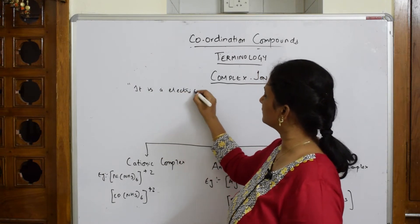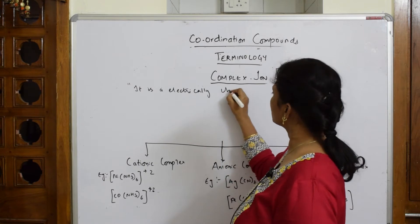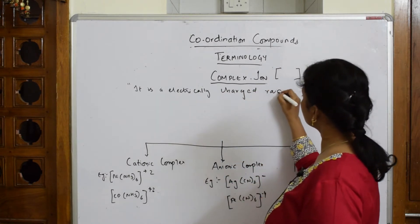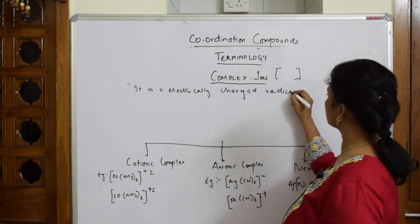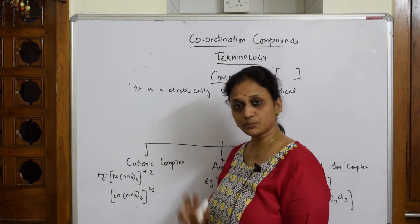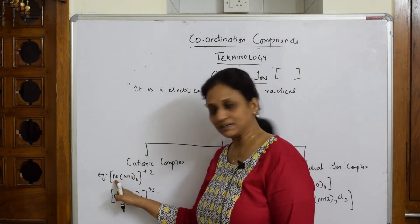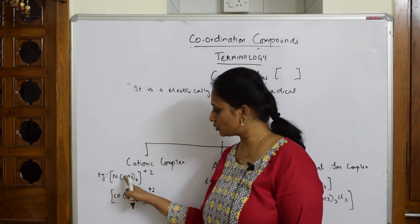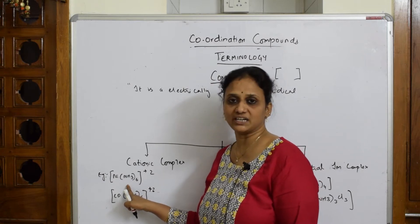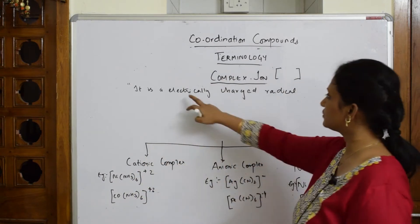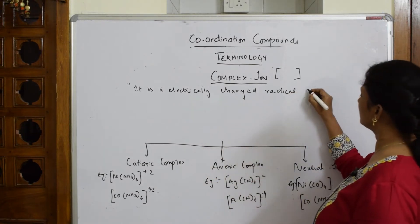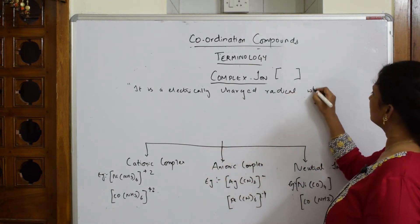What does this electrically charged radical contain? It has two important things: first, a metal atom which is bonded to the ligand by a coordinate covalent bond or dative bond. So it's an electrically charged radical which contains a metal atom linked to ligands.